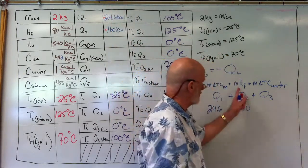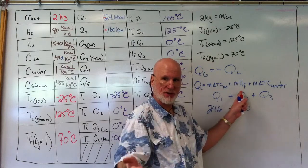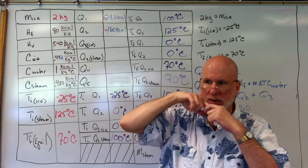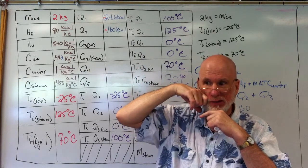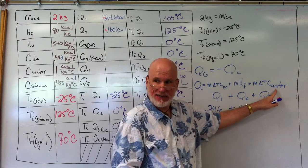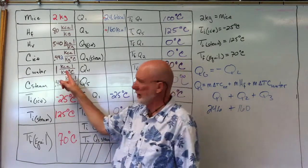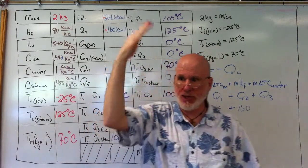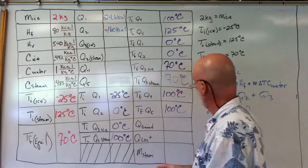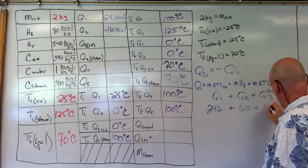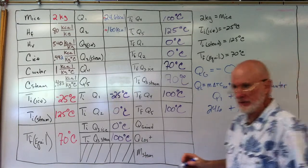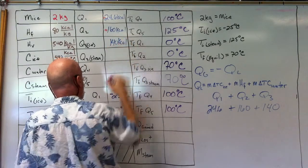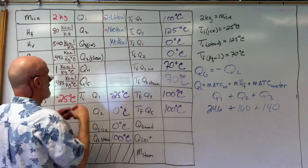Because I put in the heat of fusion, I go from zero solid to zero liquid. So 70 final temperature minus zero times two times one, which is the specific heat capacity of water. Two times 70 times one is 140.